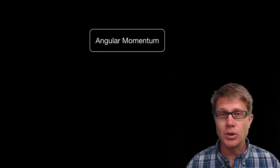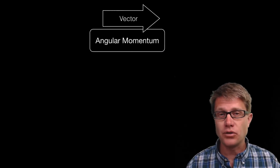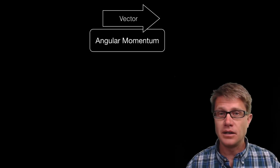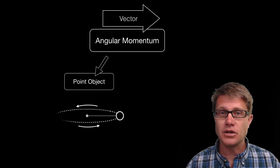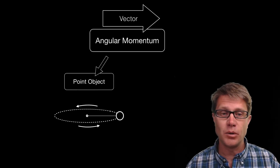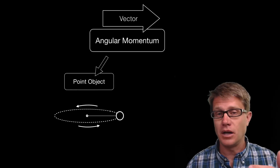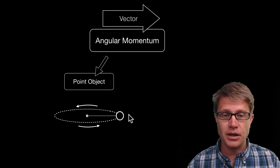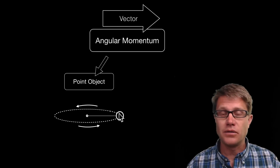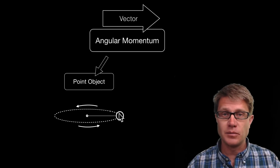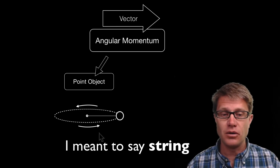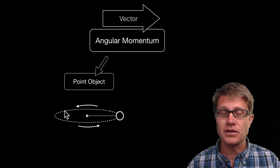Angular momentum is a vector, so there is a clear direction in which it acts. In AP Physics you should be able to understand the angular momentum of either a point object — an object accelerating around a point, such as an object attached to a spring or a planet orbiting around the sun.